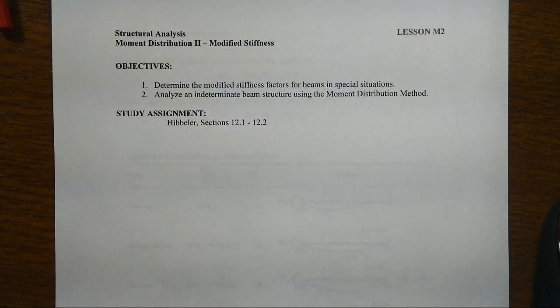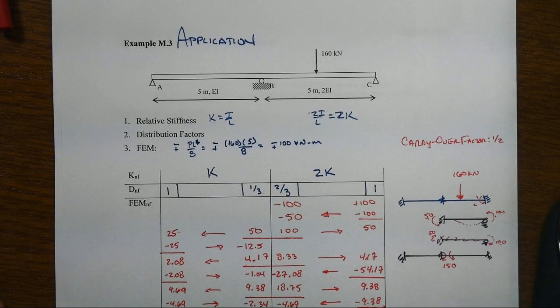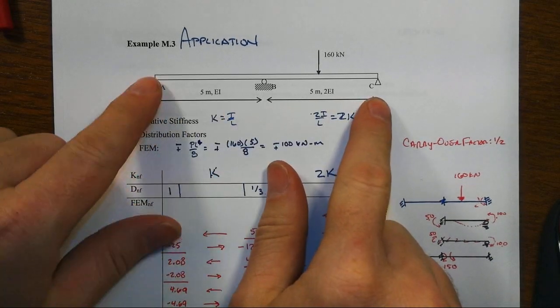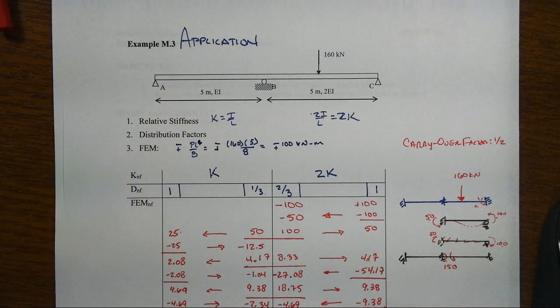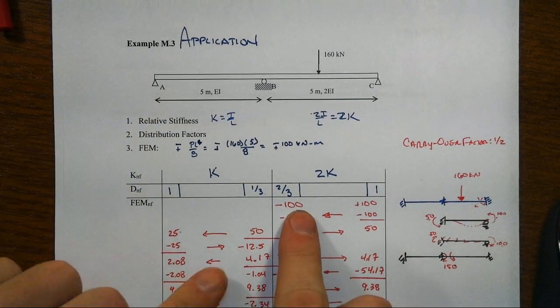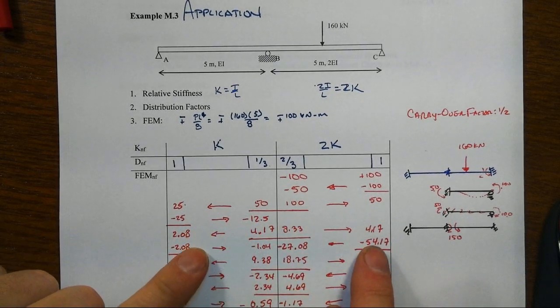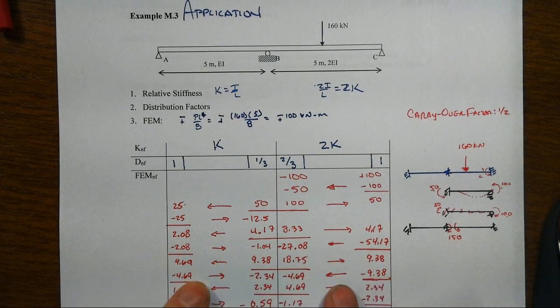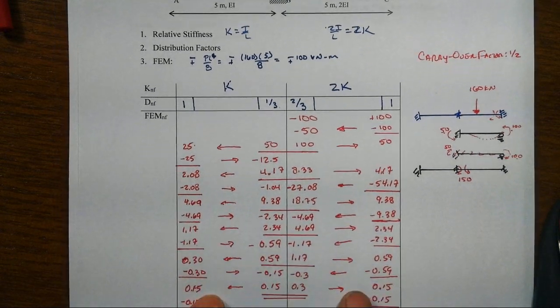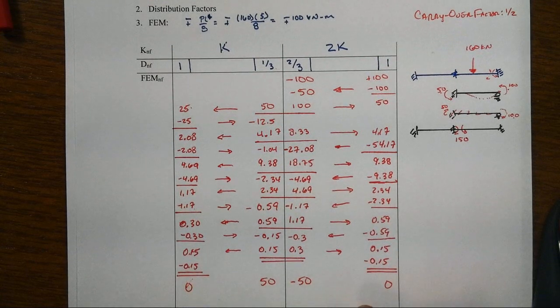In this lesson, we're going to focus on how we can make the moment distribution process go much faster. For instance, back in example M3, we had two pinned ends, and it was because of those pinned ends that as we were distributing the effects of releasing the middle joint and shooting out effects to the far ends, we had to release them again and shoot back, going back and forth. It was long, it was tedious, it wasn't hard, but it took a long time.